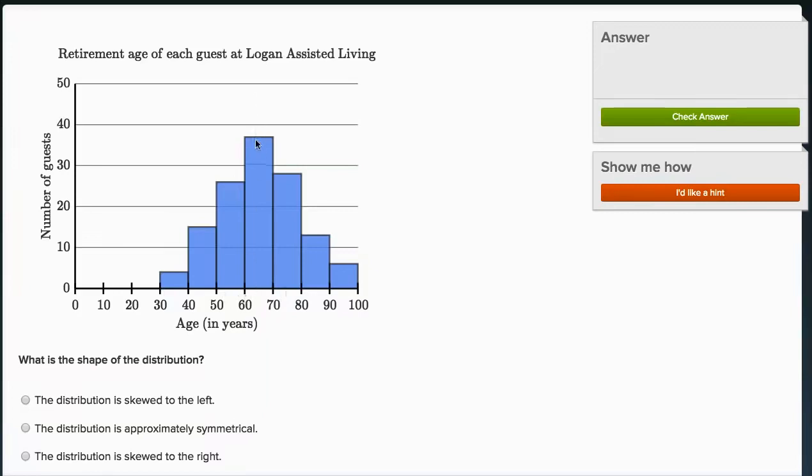If I were to draw a line of symmetry right down here at around an age of 65, this is a bucket for ages 60 to 70. Then you could flip it over and it looks pretty symmetrical. Not exactly. This bucket doesn't quite match up to this one, but it's pretty close. These roughly match each other. So I feel good about saying it is approximately symmetrical.